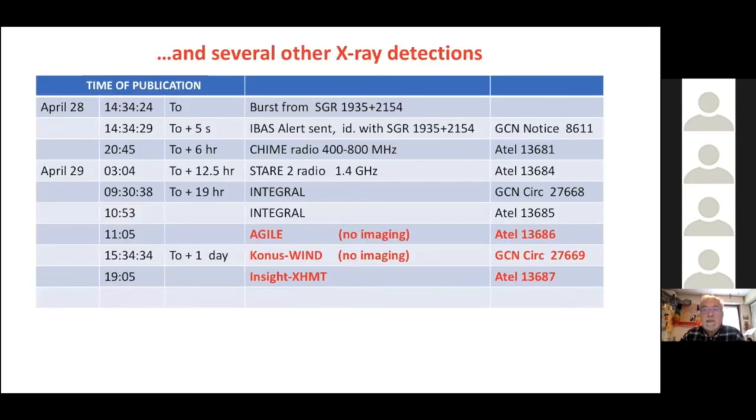The event was also seen by a few other X-ray and gamma ray satellites, Agile, Konus Wind and Insight, the Chinese satellite. More or less, they gave all consistent results. In the following, I will concentrate on the results that we obtained using Integral. And so, I start by showing you the light curves.